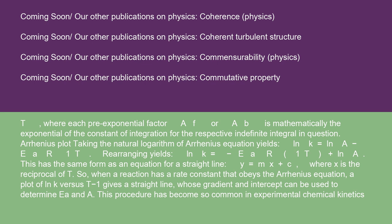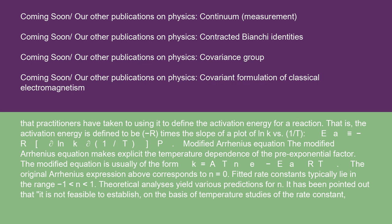Arrhenius plot: taking the natural logarithm of Arrhenius equation yields lnK equals lnA minus Ea/R·(1/T). Rearranging yields lnK equals -Ea/R·(1/T) plus lnA. This has the same form as an equation for a straight line, y equals mx plus c, where x is the reciprocal of T. So, when a reaction has a rate constant that obeys the Arrhenius equation, a plot of lnK versus T^(-1) gives a straight line, whose gradient and intercept can be used to determine Ea and A. This procedure has become so common in experimental chemical kinetics that practitioners have taken to using it to define the activation energy for a reaction. That is, the activation energy is defined to be -R times the slope of a plot of lnK versus 1/T, which is identical to -R·d(lnK)/d(1/T).